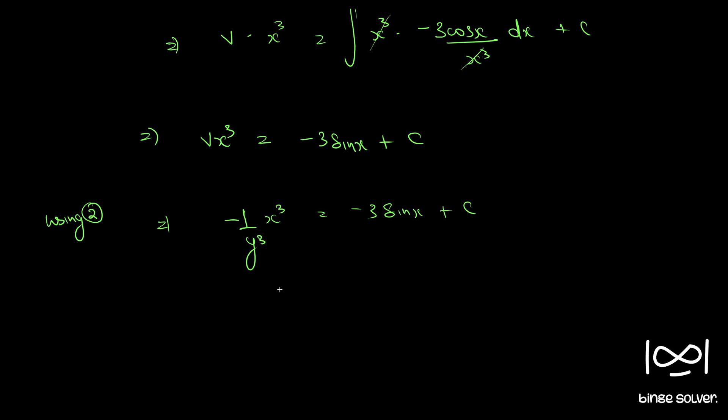Or if you rearrange, if you multiply it throughout by minus 1, we have x cubed by y cubed equal to 3 sine x plus another constant c1, where c1 equal to minus c. So this is the final solution.